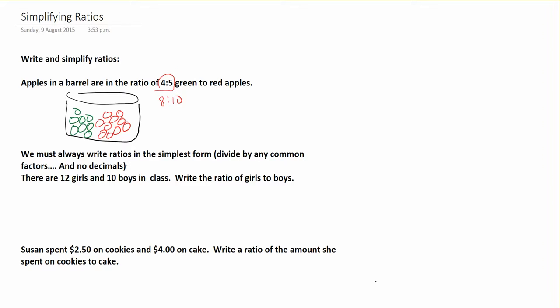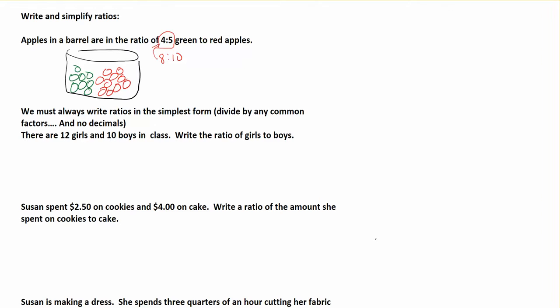When we write ratios, we always have to write them in simplest form. We look for that common factor, such as taking 8:10 down to 4:5. But we also want to watch out for decimals. If there's a decimal, we'll want to times to get rid of it.